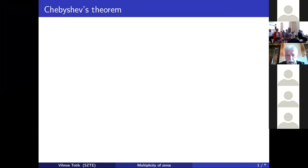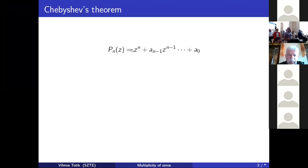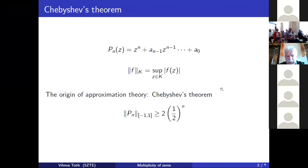Let me start with Chebyshev's theorem. We will talk about polynomials with leading coefficient one — sometimes called monic polynomials — so the first coefficient is one. P_n will always mean a degree-n polynomial, and I use supremum norm throughout. The origin of approximation theory is Chebyshev's theorem, which says that the norm of P_n on [-1, 1] is always at least 2 times (1/2)^n.